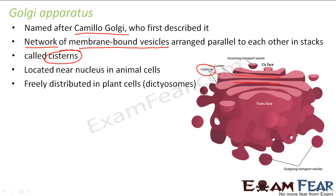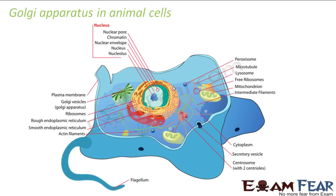Golgi apparatus is generally located near the nucleus in animal cells. In plant cells, they are freely distributed and the Golgi apparatus in plant cells is known as dictyosomes. So in animal cells it is near the nucleus, but in plant cells it can be scattered anywhere and is called dictyosomes.